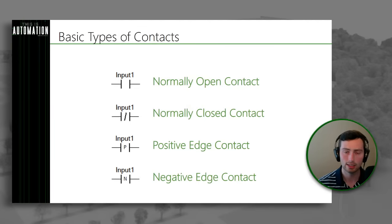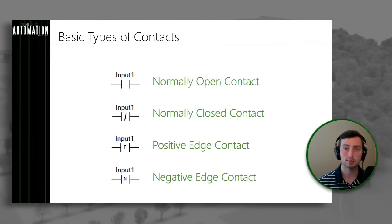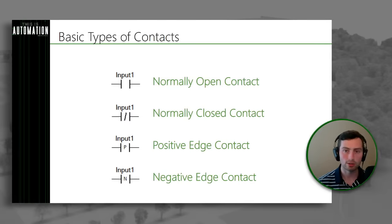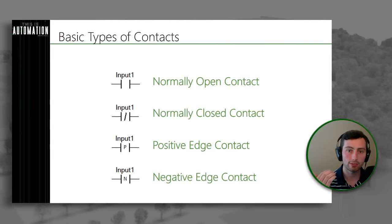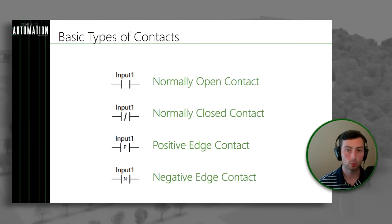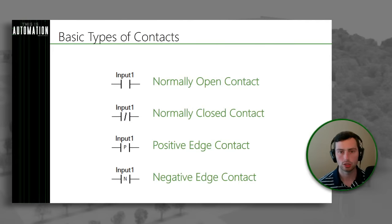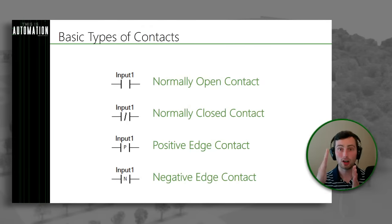There are actually many types of contacts you can use when building out a ladder logic program. The basic types are shown here on the screen. The first one is a normally open contact — the standard one. Let's say input one is the tag or variable tied to this contact. If input one is true, then that contact will close, and if input one is false, that contact would be open — very much like a switch. With a normally open contact, when we turn on input one it closes, and when we turn off input one it opens.